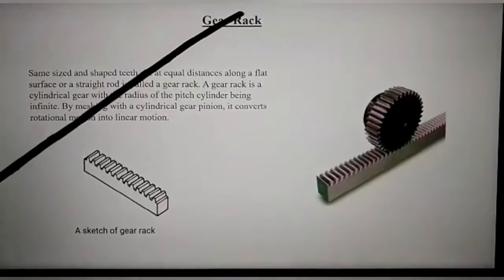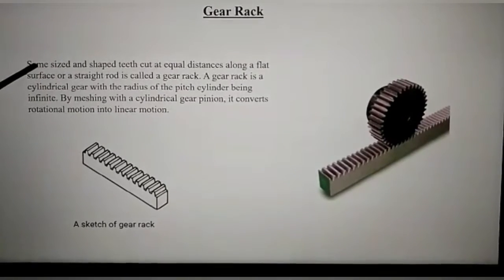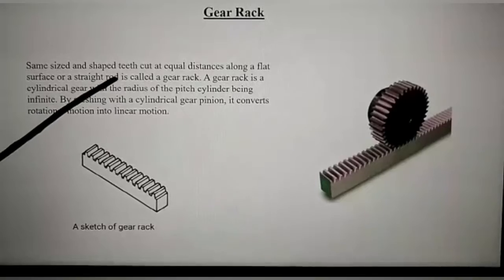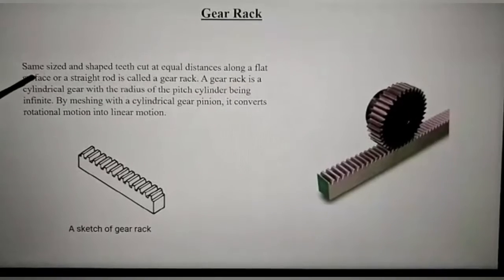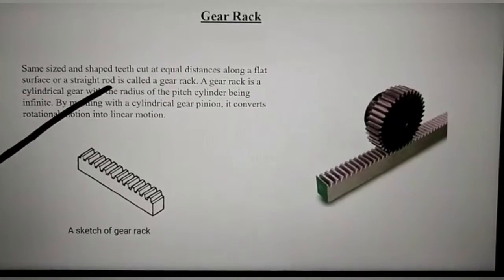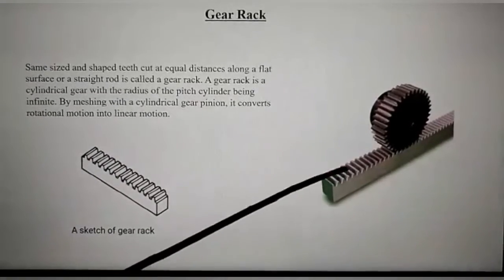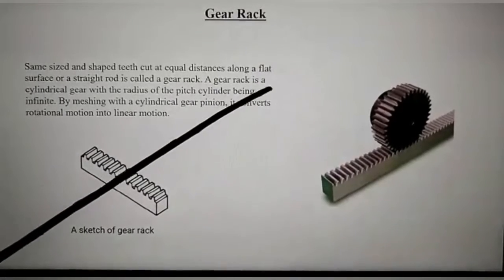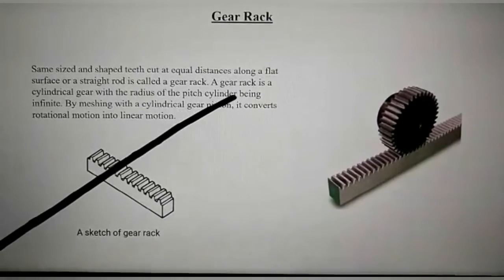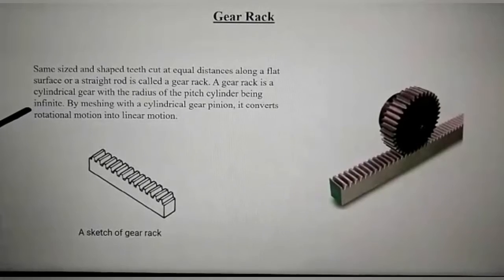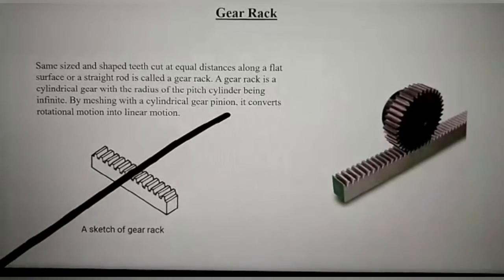Within class, a gear rack has teeth cut at equal distances along a flat surface or a straight rod. A gear rack is a cylindrical gear with the radius of the pitch cylinder being infinite, meshing with a cylindrical gear pinion.